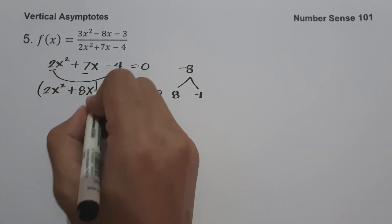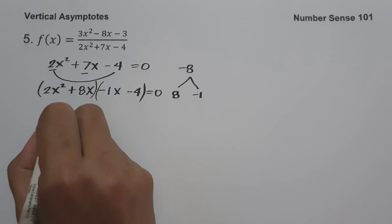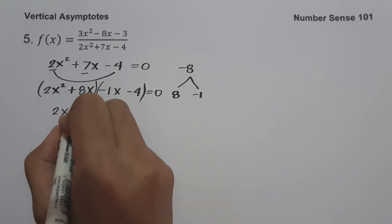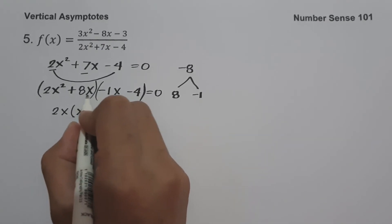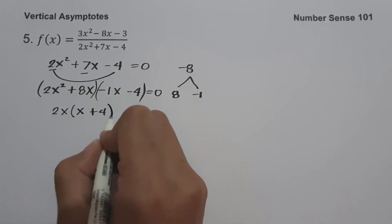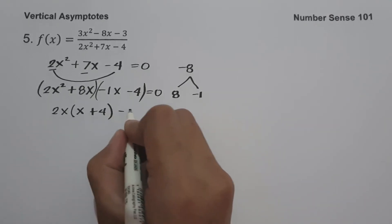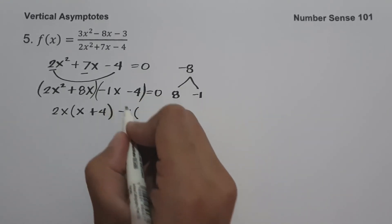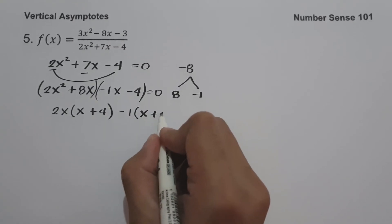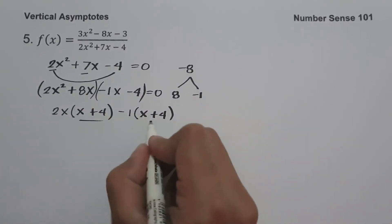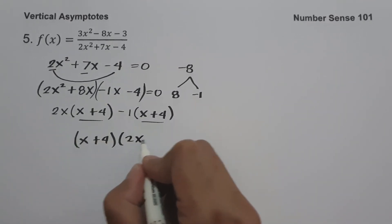Let us factor by grouping. The greatest common factor between 2x squared and 8x is 2x. Dividing: 2x squared divided by 2x is x, and 8x divided by 2x is 4. On the other side, the greatest common factor between negative 1x and negative 4 is negative 1. Dividing: negative 1x divided by negative 1 is x, and negative 4 divided by negative 1 is 4. So the factors are x plus 4 and 2x minus 1.